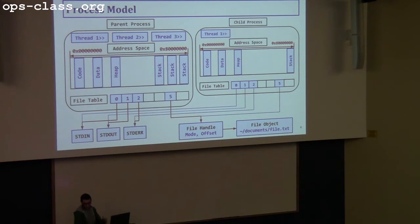So we have three levels of indirection: the file table, the file handle, and then the file object.